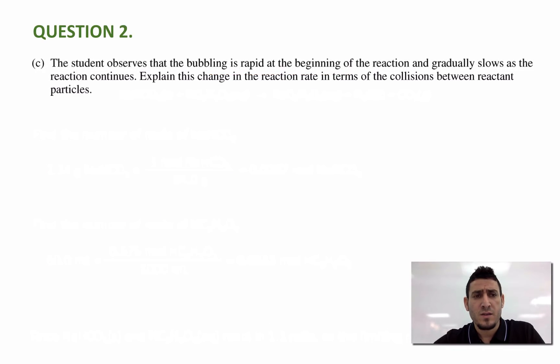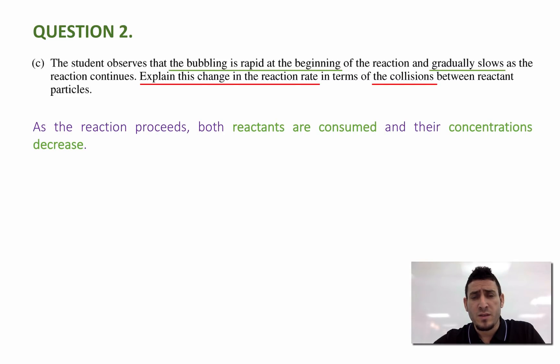The question says, the student observes that the bubbling is rapid at the beginning of the reaction and gradually slows as the reaction continues. Explain this change in the reaction rate in terms of the collisions between reactant particles.